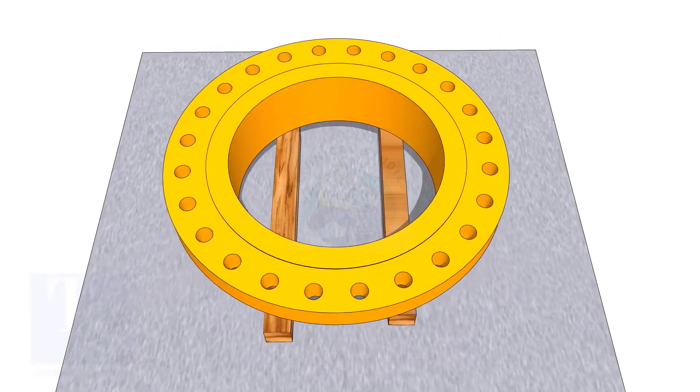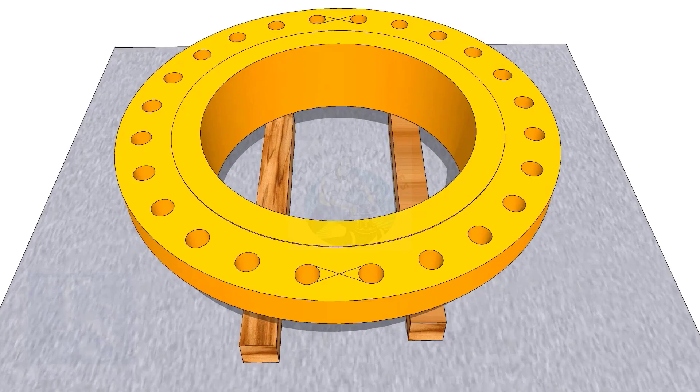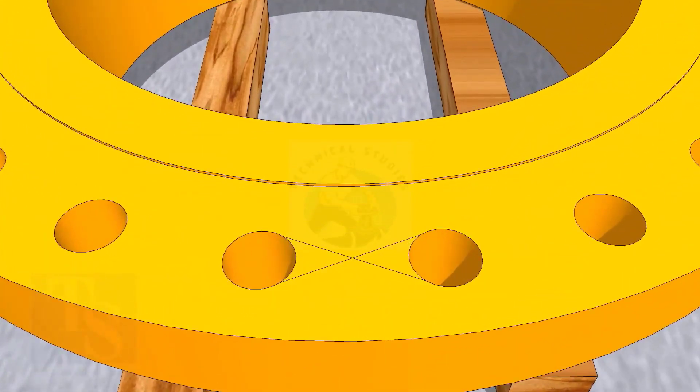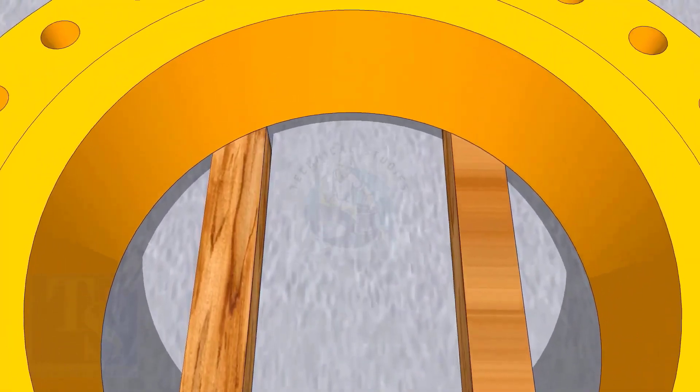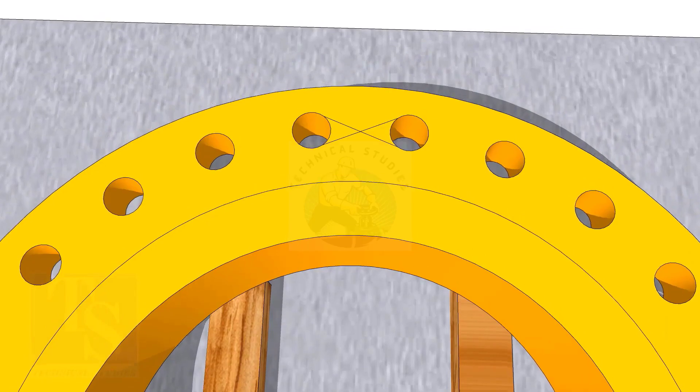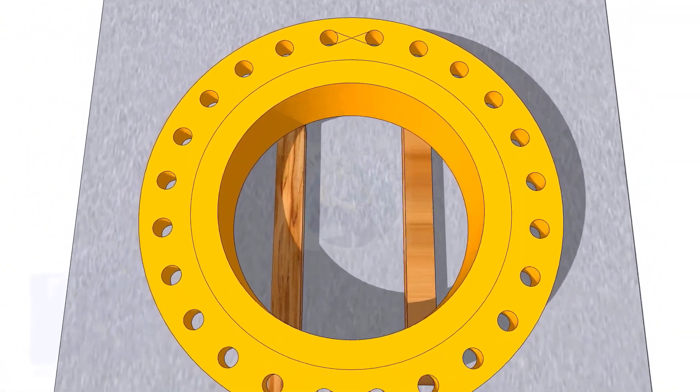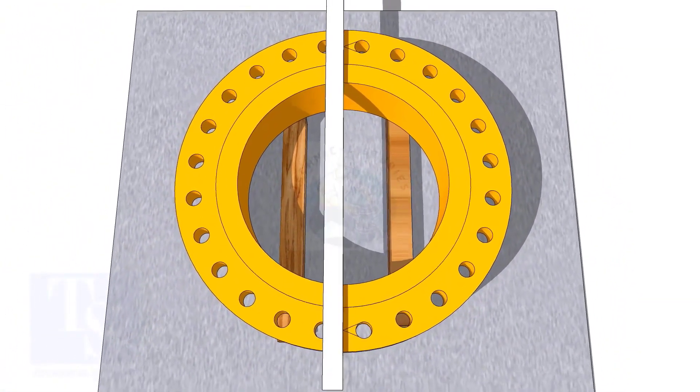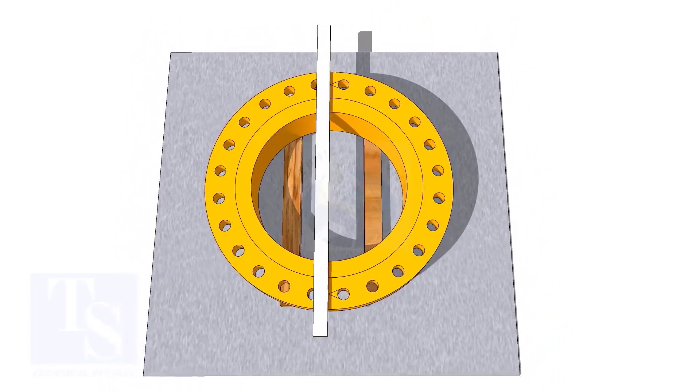In my previous videos, many times I had shown how to mark the center line of a flange. I am showing this scene again for the new viewers. Draw the center line of the flange and transfer it to the sides, as shown.